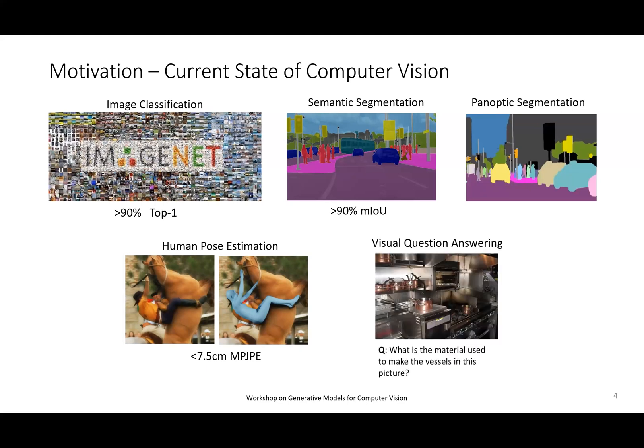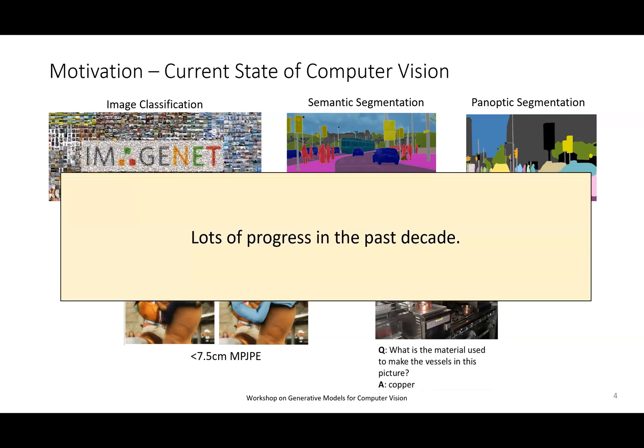We can ask very complex questions to vision models — like, look at this image and what is the material that the vessel is made of? You need to locate the vessel, know what a vessel is, find out its material properties, and disentangle that from illumination to get the answer, which is copper. Current vision VQA models can actually do these things. So there was a lot of progress over the past decade in vision, and we are all very happy about this.